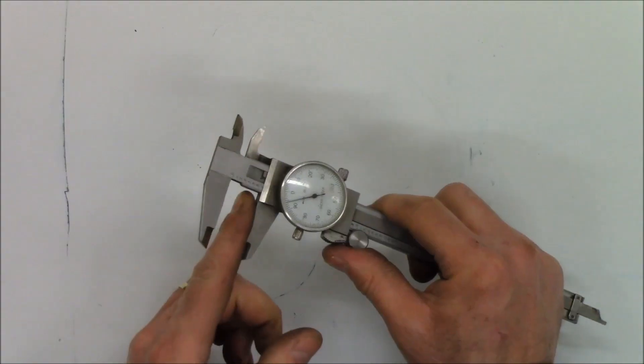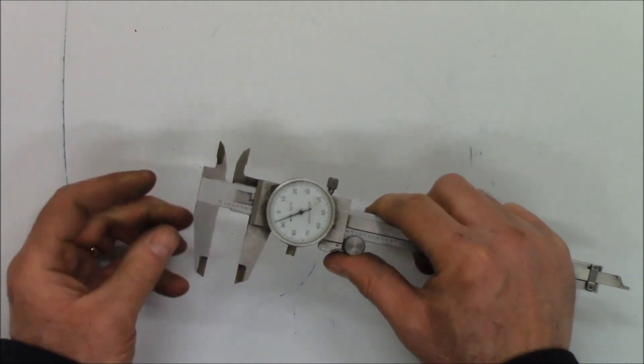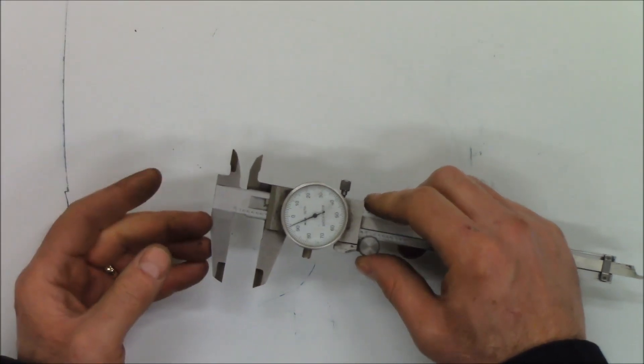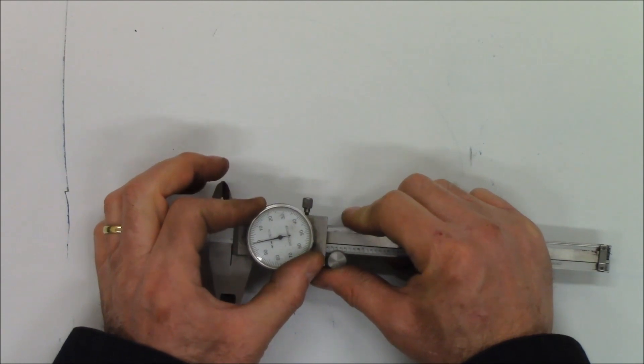When I'm going to use this, I first wipe any dirt off of it—I don't need to measure dirt. I'm going to close it up till it touches and adjust this till it says zero.